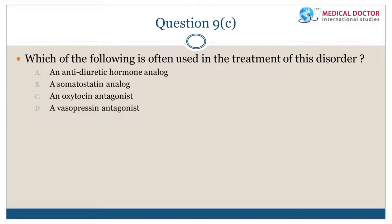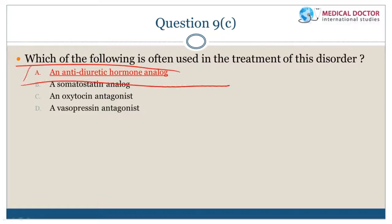Practice question: A treatment used for von Willebrand's disease is desmopressin, which increases the release of von Willebrand's factor from endothelial cells.